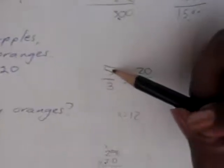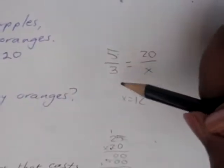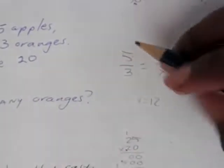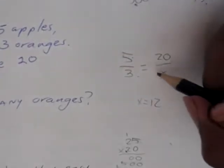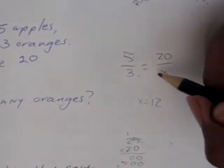This represents apples. This represents oranges. Now we know there are 20 apples. That means we make another fraction. This equals 20 over x, which is how many.